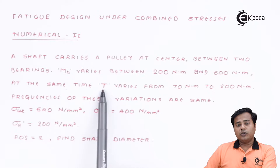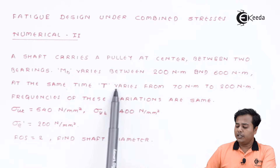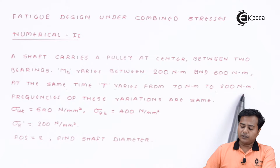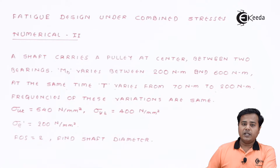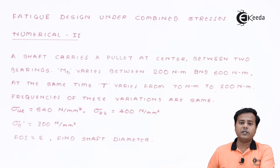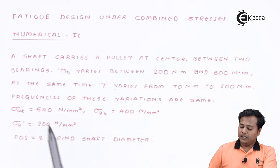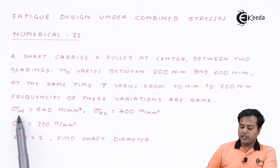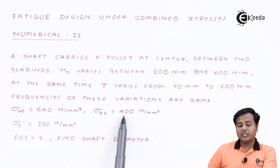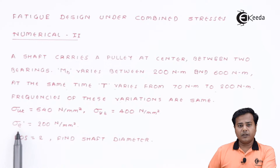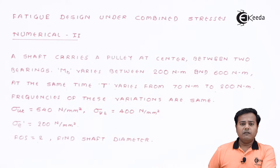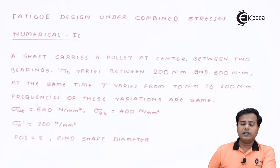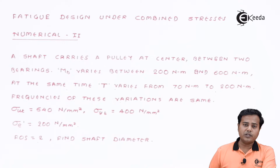Instead, bending stresses are given. At the same time, the torsional moment varies from 70 Nm to 200 Nm. The frequencies of these variations are the same, varying with the cycle of the shaft speed. The material properties given are: ultimate strength 540, yield strength 400, and corrected endurance limit 200. Factor of safety is also given. We need to find out the shaft diameter — this is a combined fluctuating load problem.